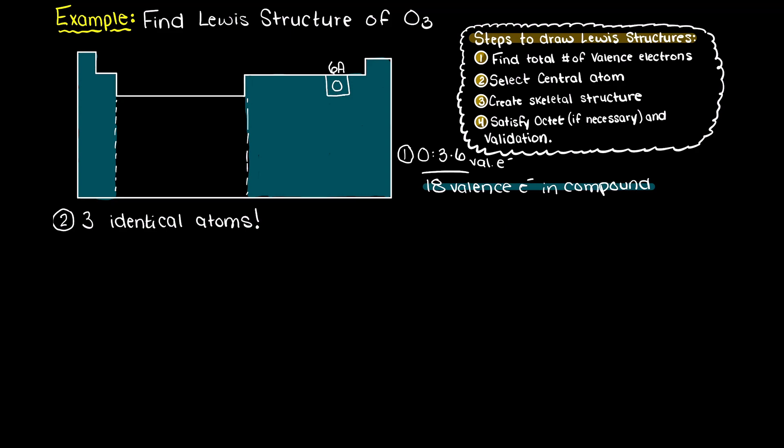Now, we need to create a skeletal structure for our compound. So, let's place any one of our oxygen atoms as our central atom, and place the other 2 oxygen atoms around the central one. Then let's add in our valence electrons and create our skeletal structure. However, this doesn't really work as we have 2 single electrons on either side of our central oxygen atom, so what do we do here?